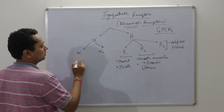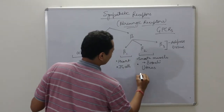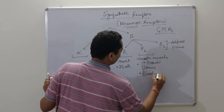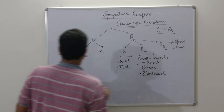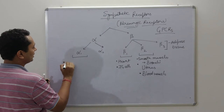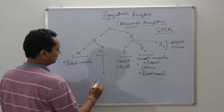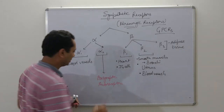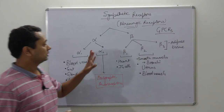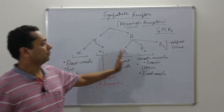Alpha-1 receptors are also present on your blood vessels. Alpha-2 receptors are pre-synaptic auto receptors. So these are the locations where these receptors are found: alpha-1, alpha-2, beta-1, beta-2, and beta-3.